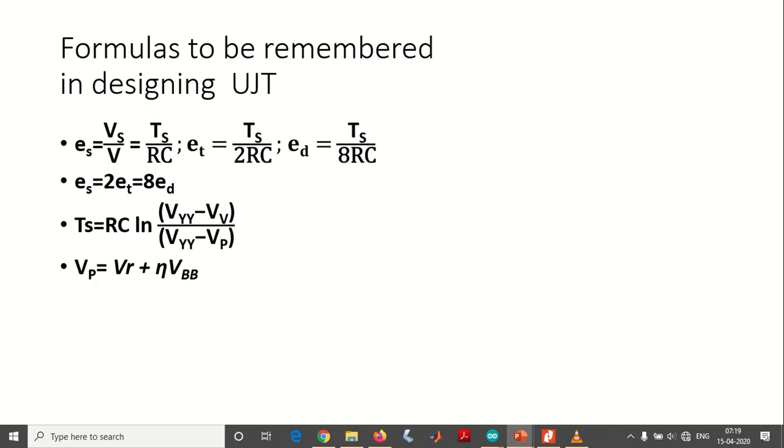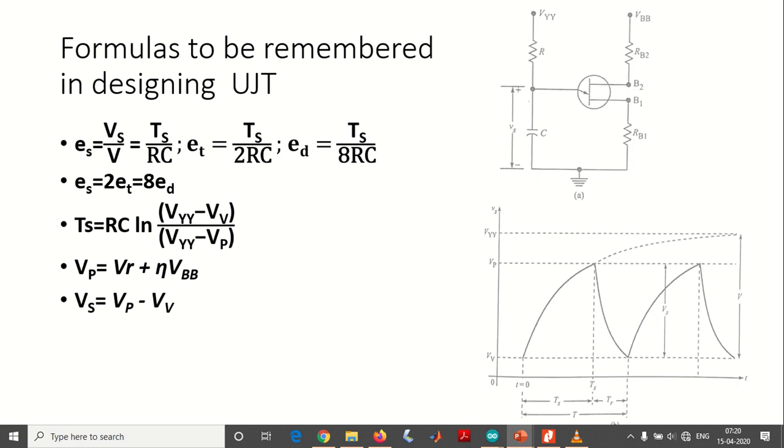So V gamma plus eta VBB, the sweep time future VS equals VP minus VB. We are about to design the circuit shown here by observing these characteristics. Let's go to the problem.